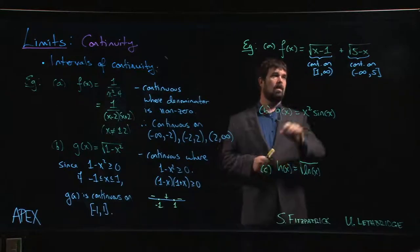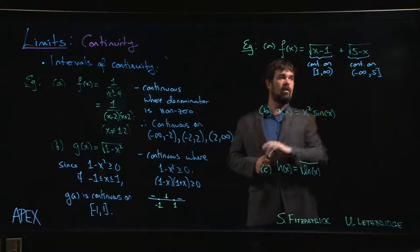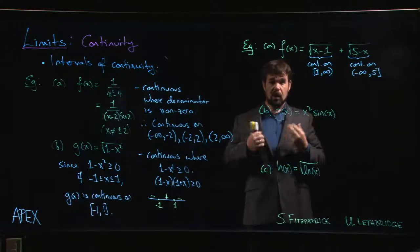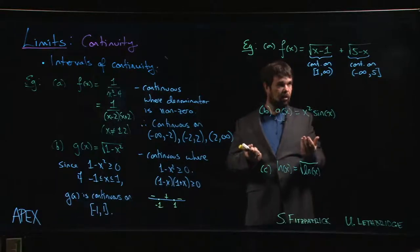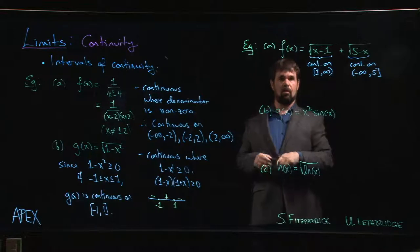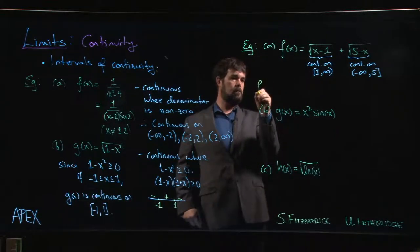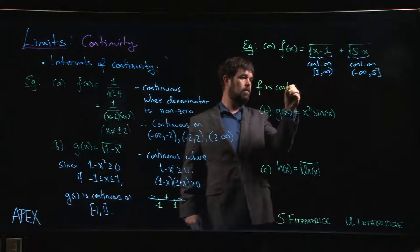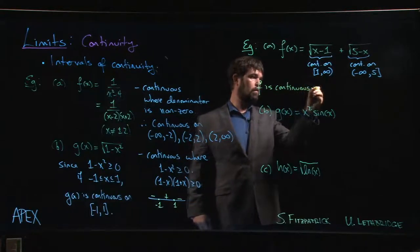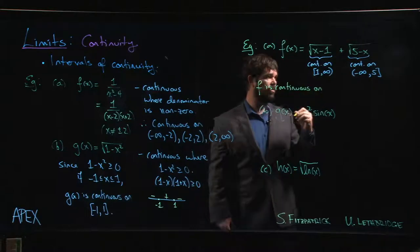So this is defined for x bigger than or equal to 1. This one is defined for x less than or equal to 5. We want to be able to add them so we need both of these conditions to hold and the result is that f is continuous on the intersection of these two intervals.